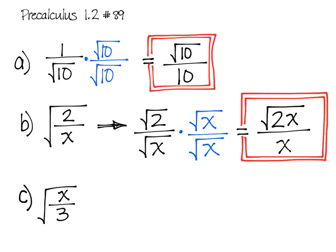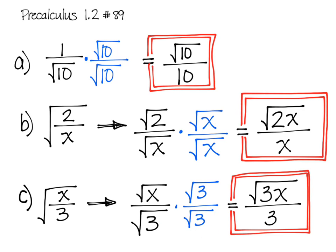And in Part C, it's very similar to Part B. Break it up, multiply by the square root of 3, so that we will rationalize the denominator, and we have our final answer. Thank you.